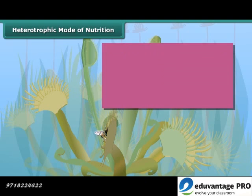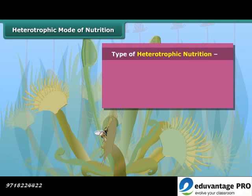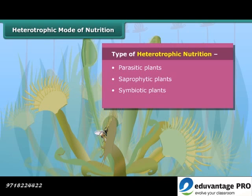There are four types of heterotrophic plants: parasitic plants, saprotrophic plants, symbiotic plants, and insectivorous plants. Now let's learn them one by one in detail.